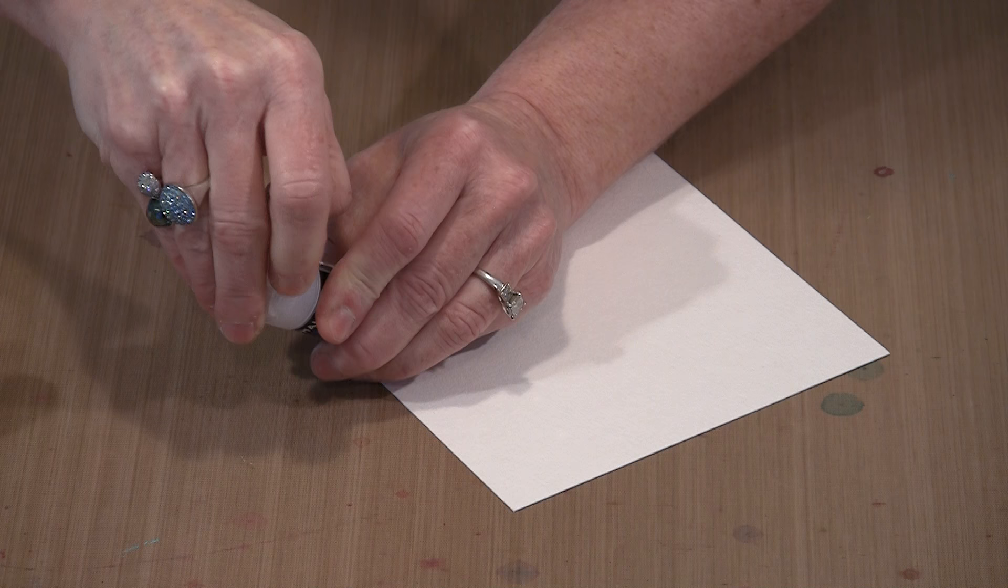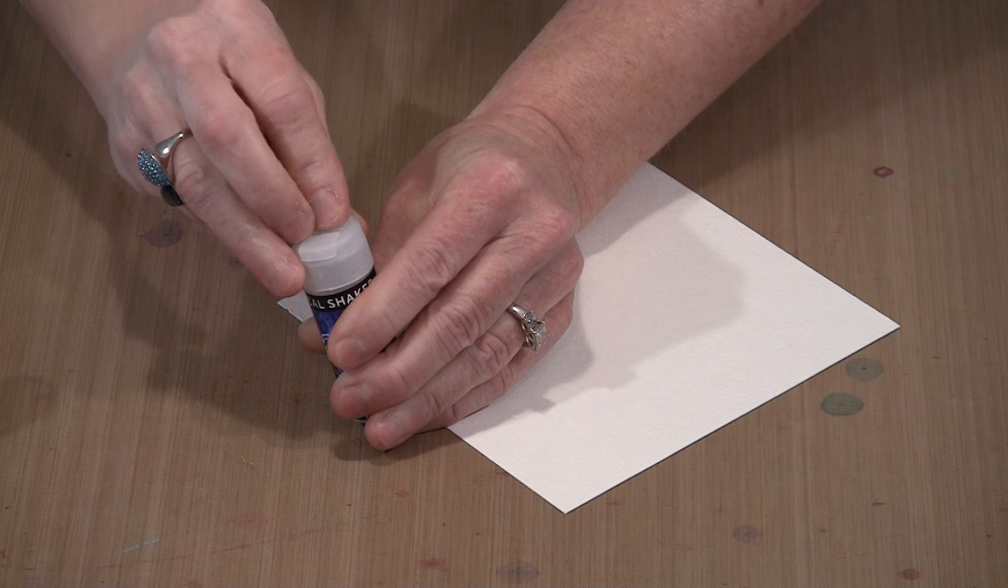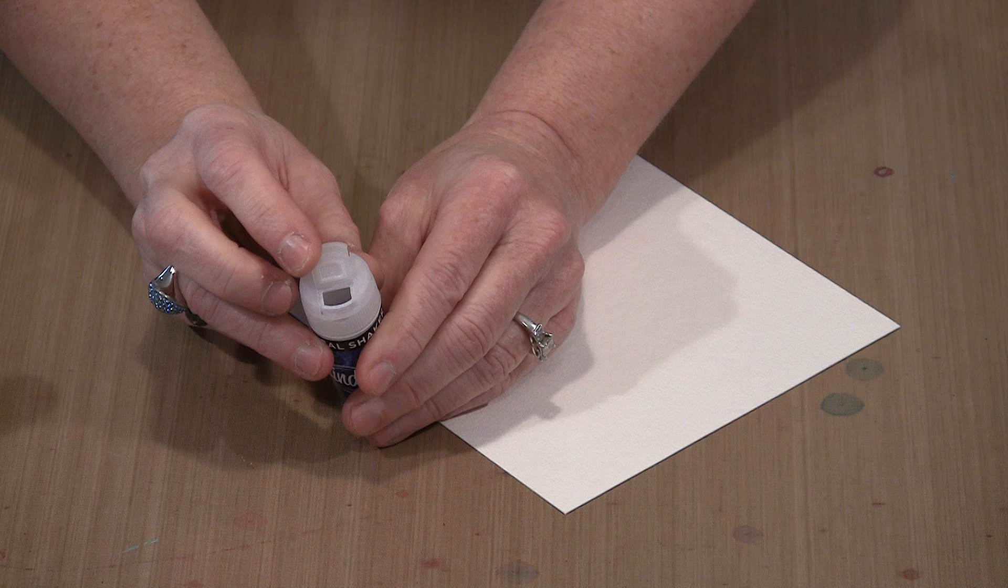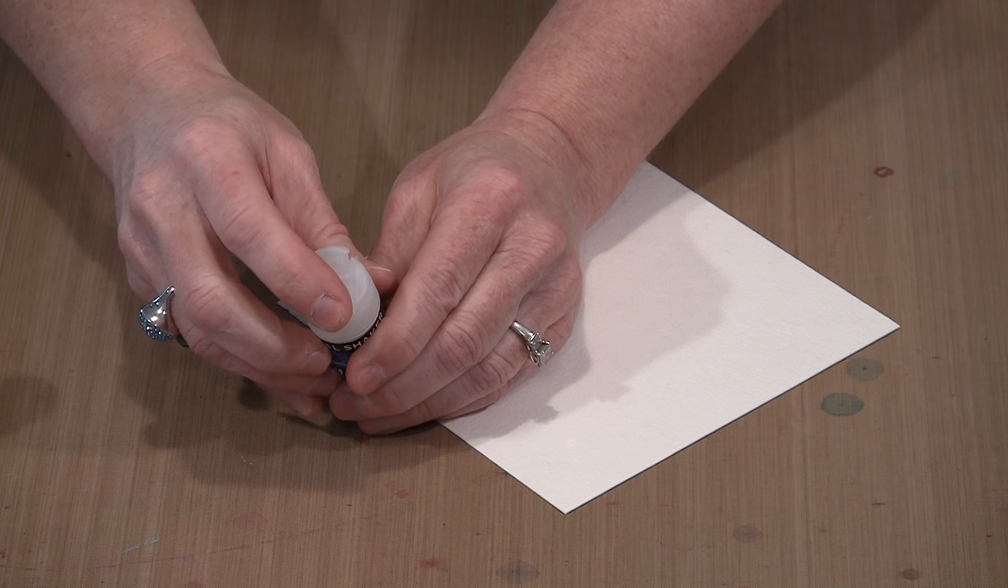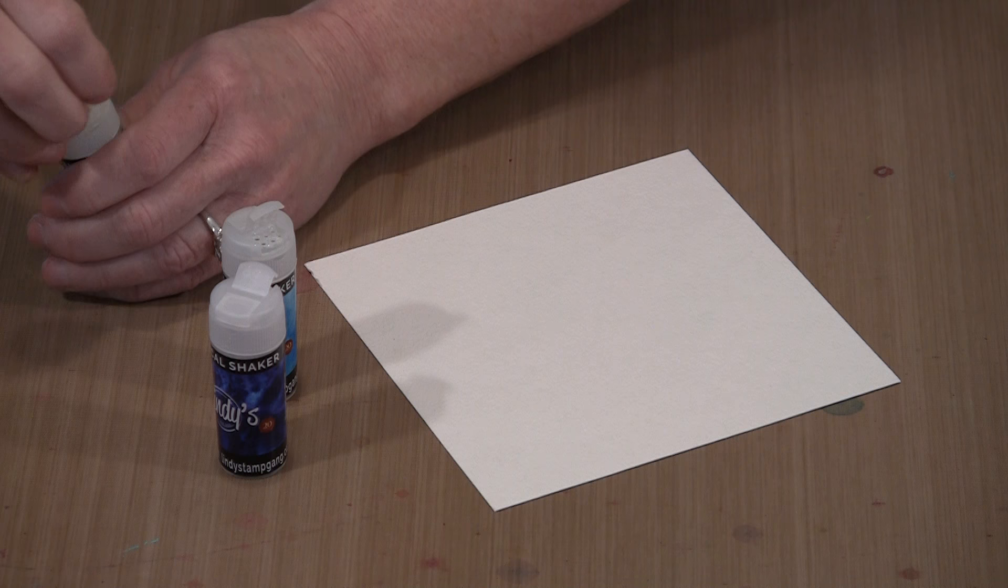So coming back to this container, you can see that I've got this side. You just lift this top. You've got the shaker top. And then on this side you have a larger opening. And the reason that this is important is because I'm going to show you that you can use this like the Magicals with a brush. That will be kind of the last thing that we do. But it's certainly very doable.